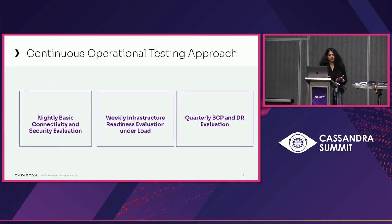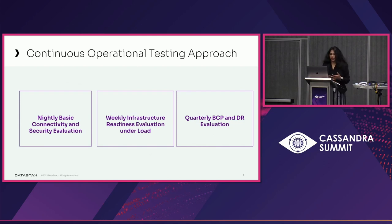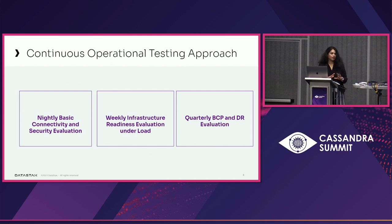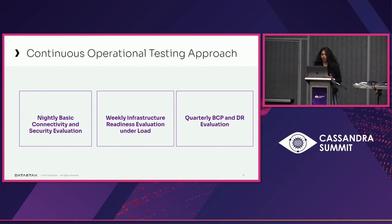How are we changing it? What it means to have an operational testing approach is to left-shift and change all this point-in-time testing to a more continuous pattern, and you develop that muscle for it. For instance, this is what we do at DataStax with respect to DSE: we have nightly basic connectivity and security evaluation testing, then we have infrastructure readiness evaluation under load that runs weekly, and then we have even more exhaustive BCP DR evaluation that runs quarterly. The complexity increases — basic connectivity and security evaluation verifies driver validity, whether metrics look optimal; infrastructure readiness ups the game with higher load and wider infrastructure footprint; and quarterly BCP DR evaluation gets even more complicated from both infrastructure and load perspectives.